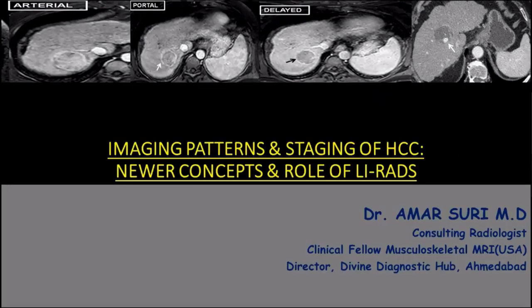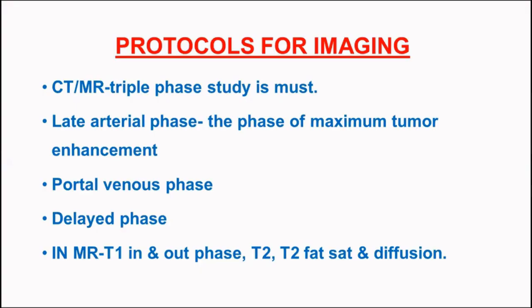In this session, we will discuss the imaging patterns and staging of HCC as per newer concepts and the role of LI-RADS. It is necessary to obtain good quality images for the imaging of a space-occupying lesion in the cirrhotic parenchyma. For this purpose, we perform a triple phase study in either CT or MRI. If MRI is available, it is always preferable over CT scan.